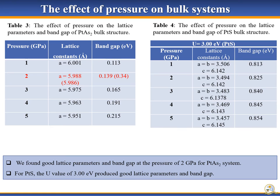These tables display the effect of pressure on structural and electronic properties of sperrylite and cooperite bulk structures. For sperrylite, as the pressure is increased, the lattice parameter decreases with the bandgap increasing. Similarly for cooperite, as the pressure is increased, the lattice parameter decreases with the bandgap increasing. We obtained good lattice parameters and bandgap at a pressure of 2 GPa for the sperrylite system. For cooperite, we did not consider hydrostatic pressure since we obtained good lattice parameters and bandgap at the Hubbard U value of 3 eV.